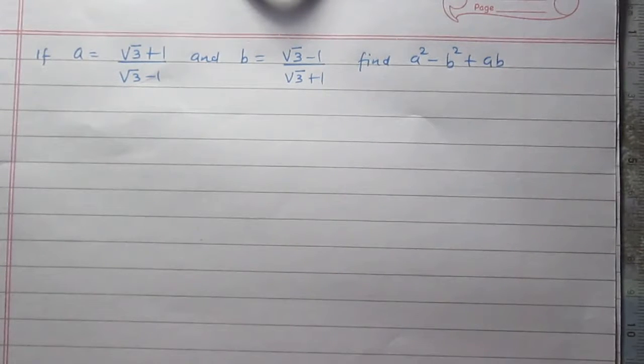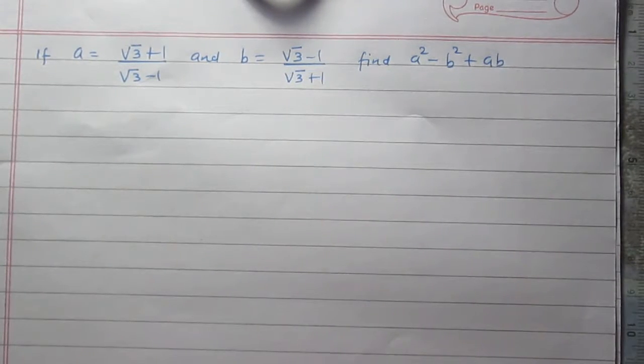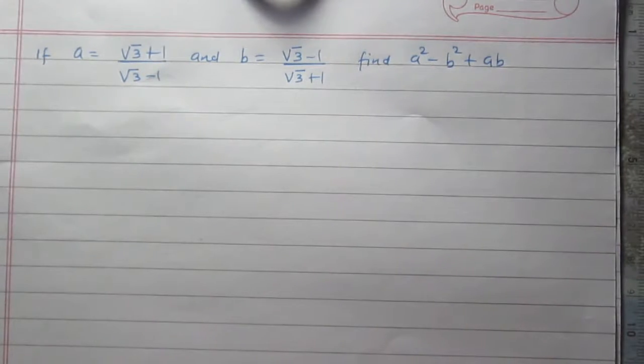In this question, we are given the values of a and b, and we are to find a squared minus b squared plus ab.